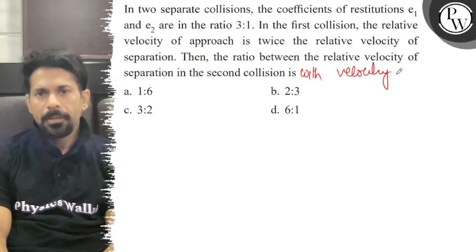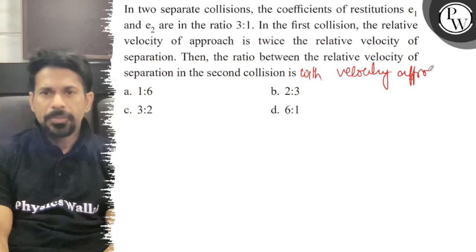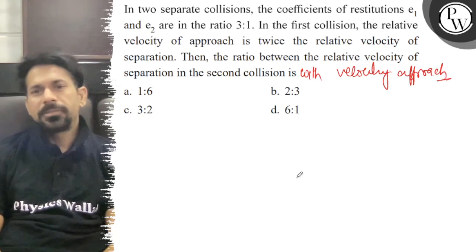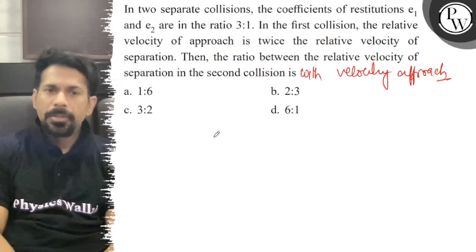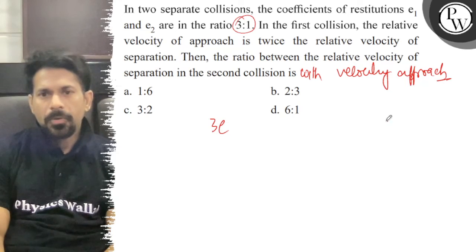The question is asking for the second collision, the separation to the approach. So I'm going to say that 3 is to 1. So this is 3e and this is e.